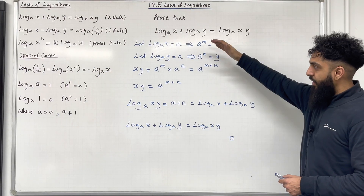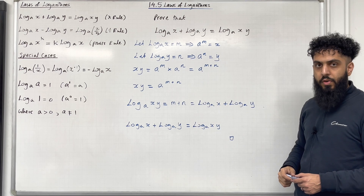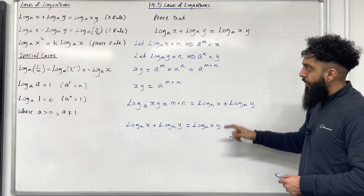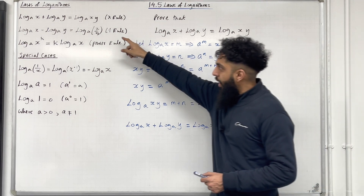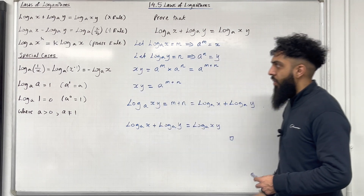So log base A of x plus log base A of y is equal to log base A of xy. End of proof. That was a proof of the multiplication rule for logarithms. You can adapt this proof to prove the division rule and the power rule for logarithms.